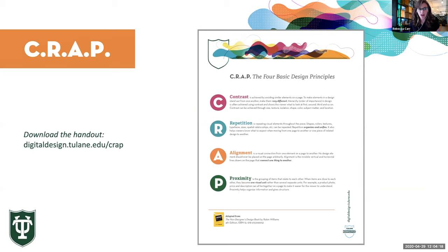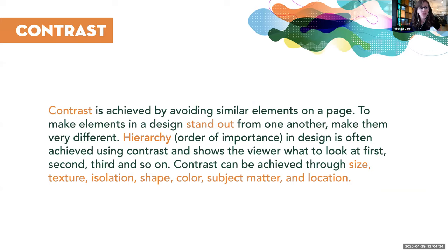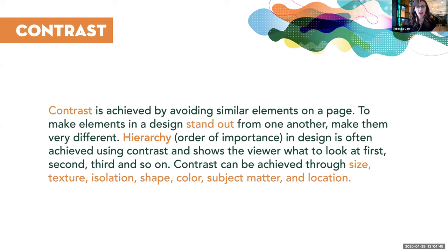The first principle is contrast. Contrast is achieved by having elements that are really different — you don't want to have too many similar elements. The reason we want this is because we want certain things to stand out, and hierarchy is what we're trying to achieve. Hierarchy is the order of importance: what's the most important thing on the design, what do you need to see first to know what it's about, and what's the second most important, etc. Contrast is one of the main ways we can achieve hierarchy. We can show contrast through size, texture, isolation, shape, color, subject matter, and location.